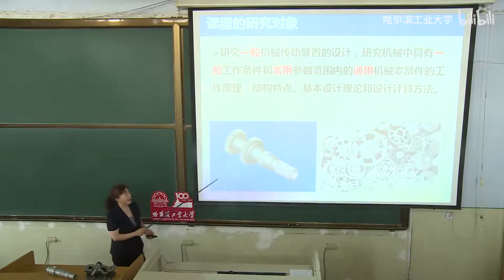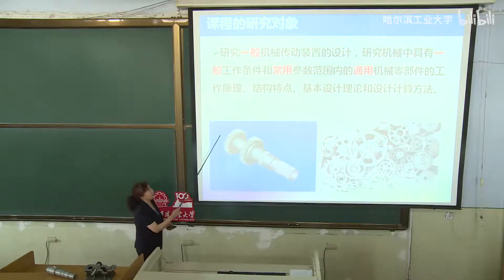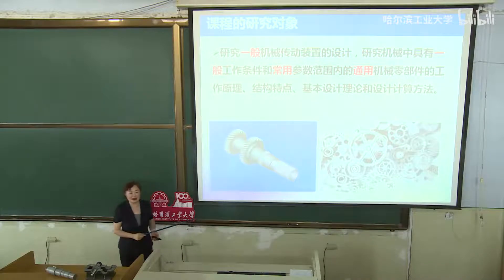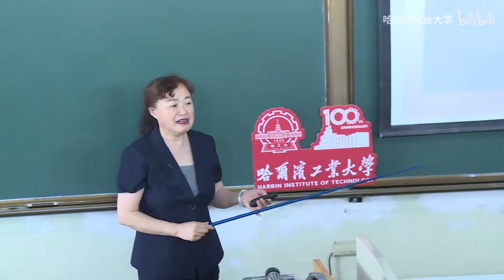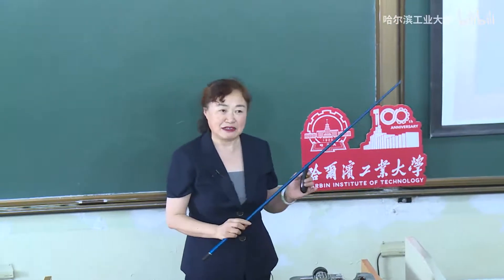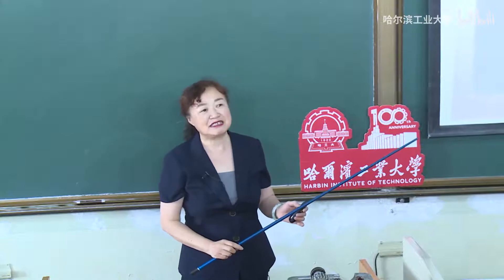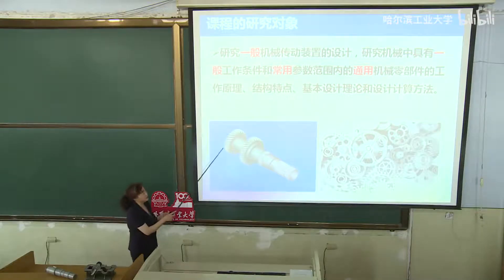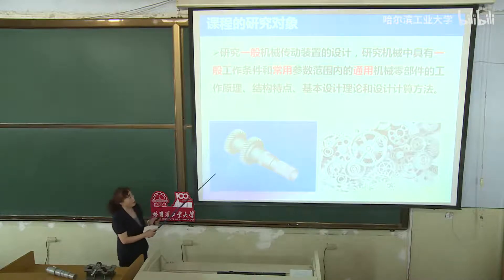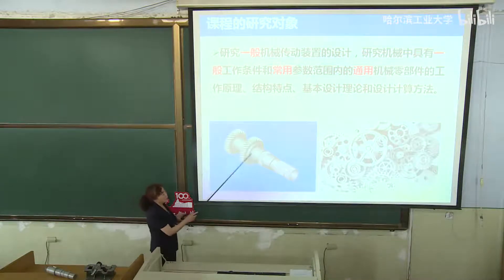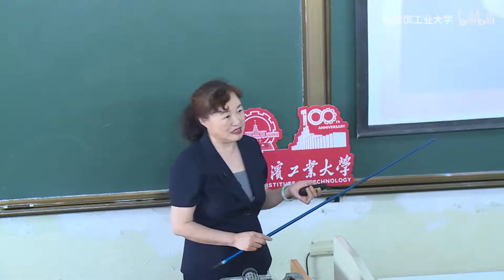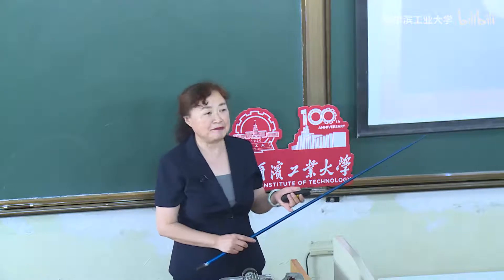我们这门课的研究对象是研究一般机械传动装置的设计，研究机械中具有一般工作条件和常用参数范围内的通用机械零部件的工作原理、结构特点、基本设计理论和设计计算方法。最重要的几个关键词：一般、常用、通用。我们只研究常用参数范围内的，不研究特别大也不研究特别小的，研究通用的机械零部件，比如不研究枪械、不研究汽轮机、不研究农业机械。